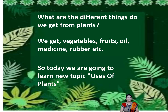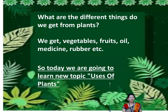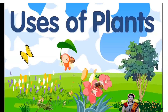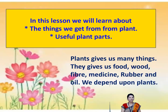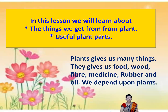So, what are the different things we get from plants? We get vegetables, fruits, oil, medicine, rubber, etc. Today we are going to learn about the uses of plants — the things we get from plants. Let's start.